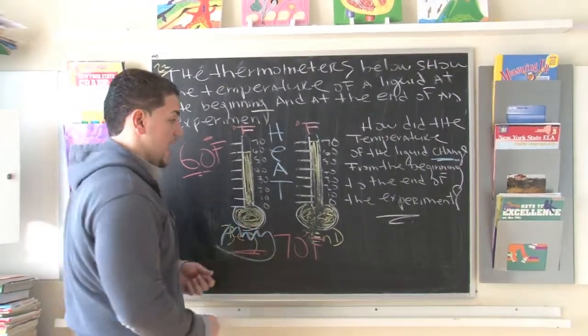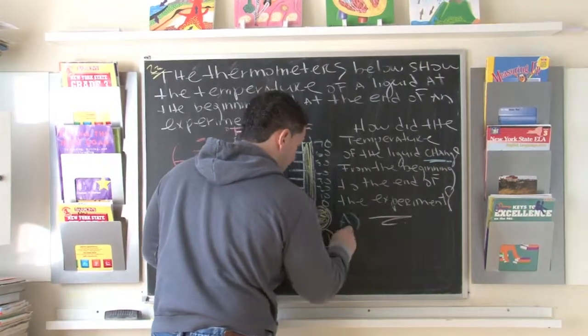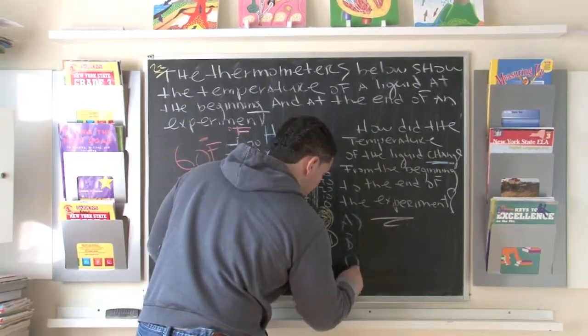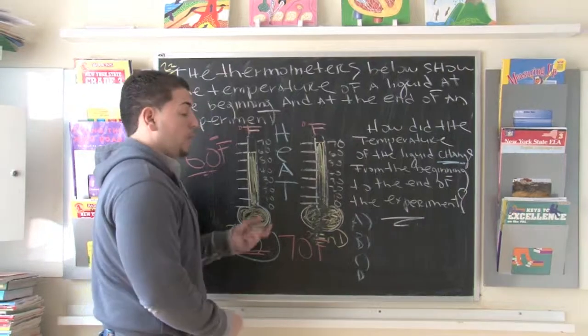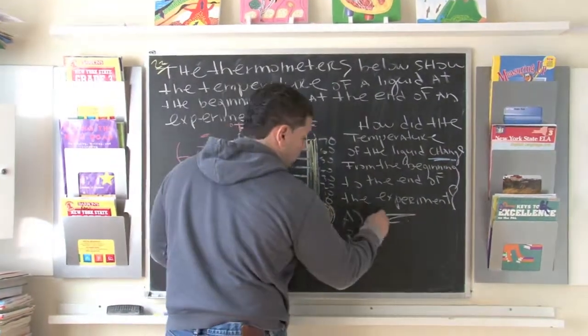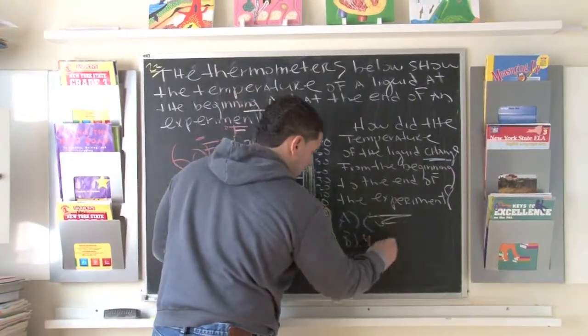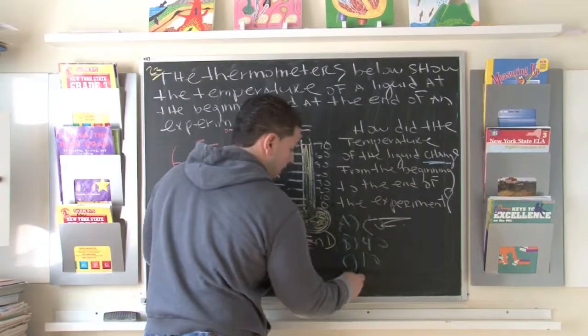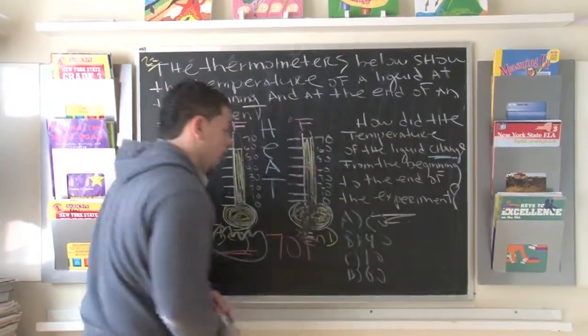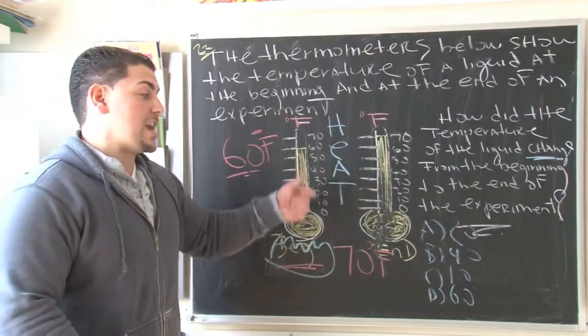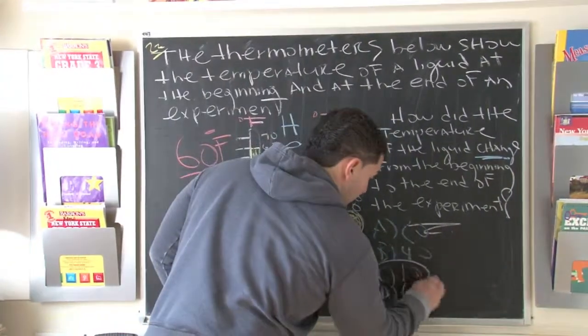So the choices that we had would be A, B, C, and D. Now, what does the temperature change? Did it go up 20 degrees? Did it go up 40 degrees? Or did it go up 10 degrees? Or did it go up 60 degrees? Well, we know, based on the two thermometers, that the heat was raised only 10 degrees.